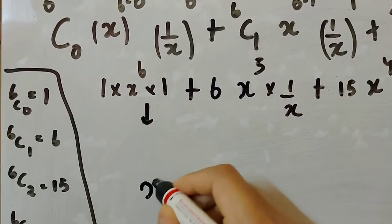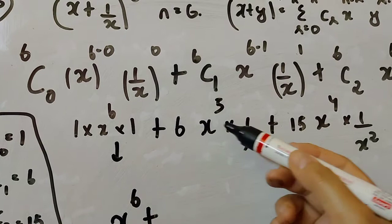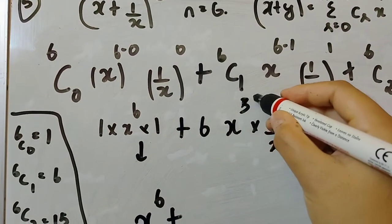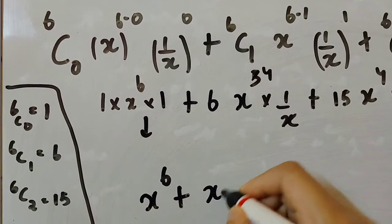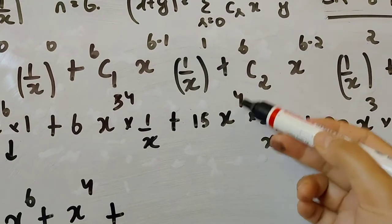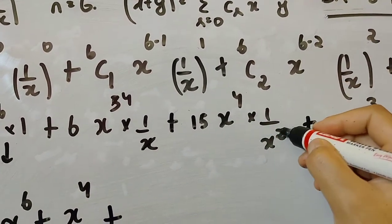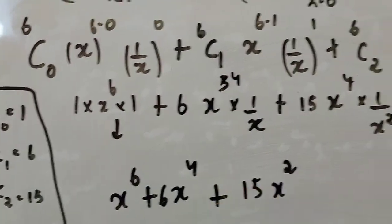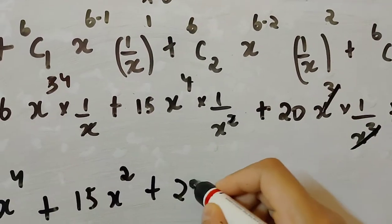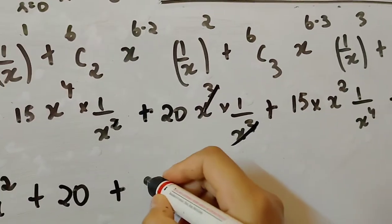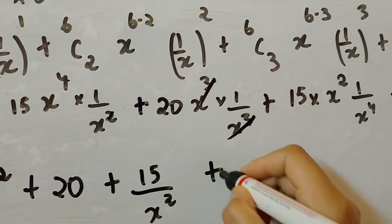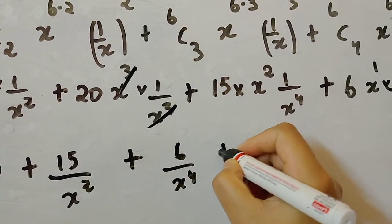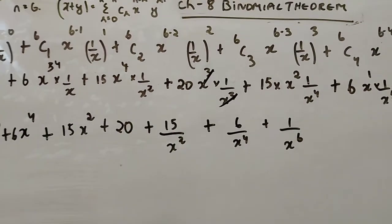Simplifying each term: x to the power 6, plus 6x to the power 4 (x to the 5 divided by x gives x to the 4), plus 15x squared (x to the 4 divided by x squared gives x squared), plus 20 (x cubed divided by x cubed cancels), plus 15 divided by x squared, plus 6 divided by x to the power 4, plus 1 divided by x to the power 6.